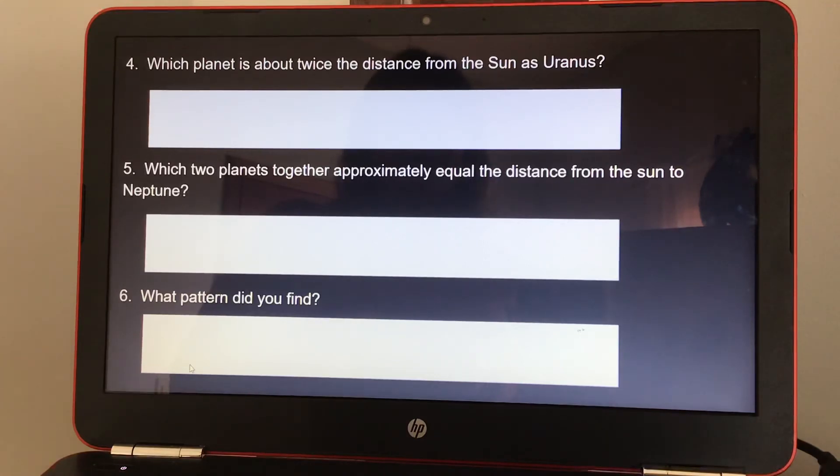Number five, which two planets together approximately equal the distance from the sun to Neptune? And what pattern did you find? And I'm going to tell you number six has something to do with doubling. So if you like my channel please subscribe, thank you.